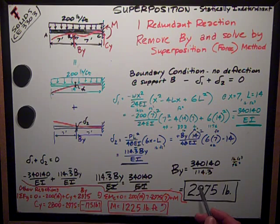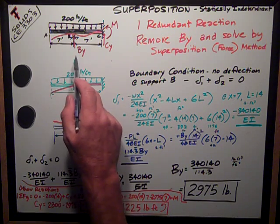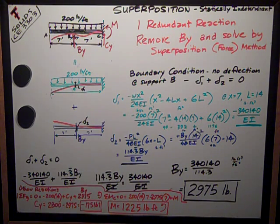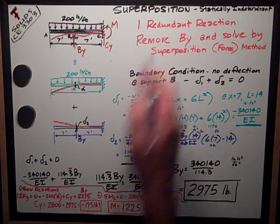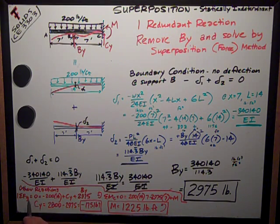So I know that that's what I wanted to know on the test, but it's interesting to point out that once you've got that unknown reaction by superposition, then it's easy to solve for the other reactions. I just use my equilibrium equations from statics. Sum of forces in the Y direction positive is up, gives me CY.